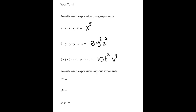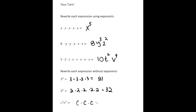Alright, now these say to rewrite each expression without exponents. This one we can write as 3 times 3 times 3 times 3 times 3, which then equals 81. Next, 2 to the fifth power means 2 times 2 times 2 times 2 times 2 — so 2 times 2 is 4, times 2 is 8, times 2 is 16, and finally times 2 gives you 32. Last but not least, we have C cubed times Z squared, so I'm going to write this as C times C times C times Z times Z.